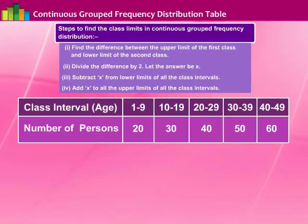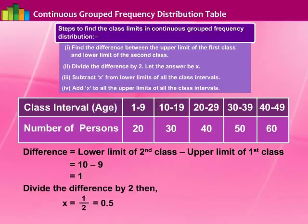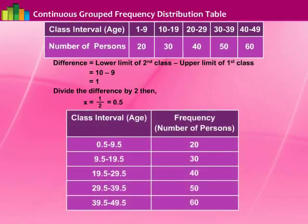In this table, the classes given have gaps. Hence, we rewrite the classes using the exclusive method. Find the difference between the upper limit of the first class and the lower limit of the second class. Then subtract 0.5 from the lower limits and add 0.5 to the upper limits. Now we get a continuous frequency distribution table with true class limits as shown.